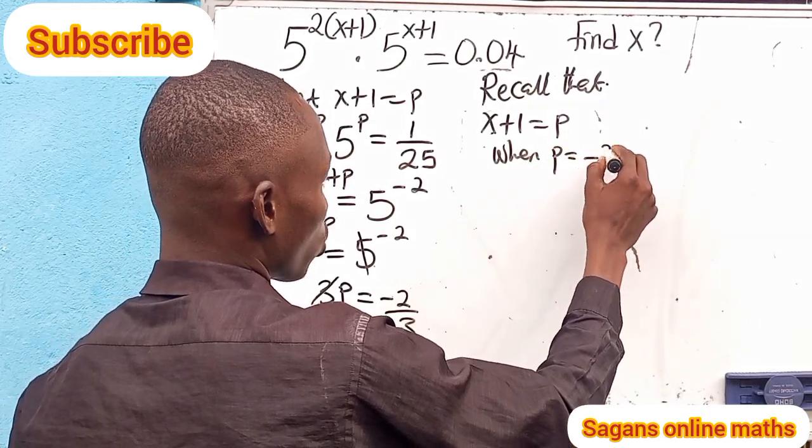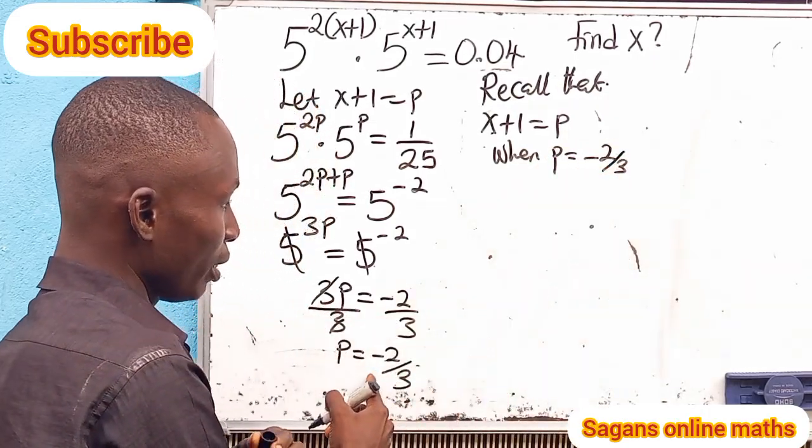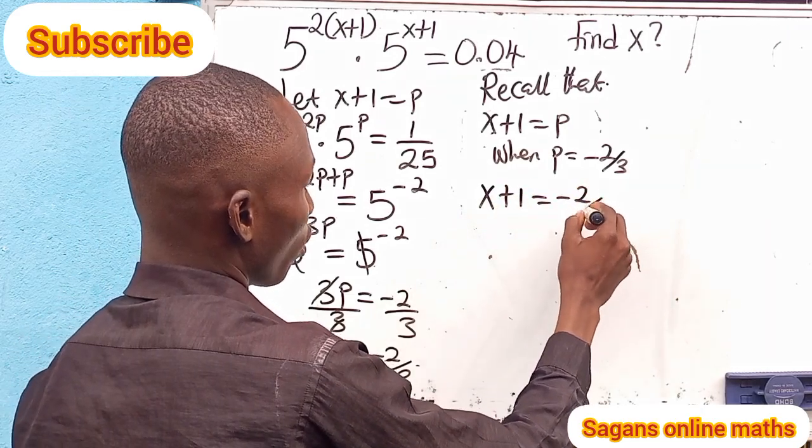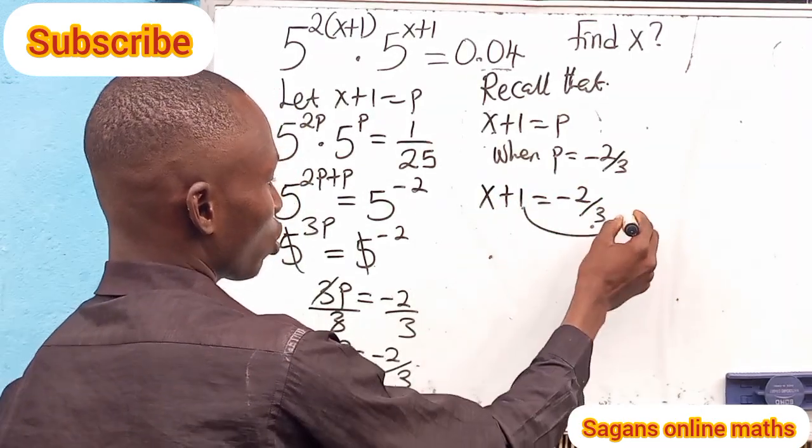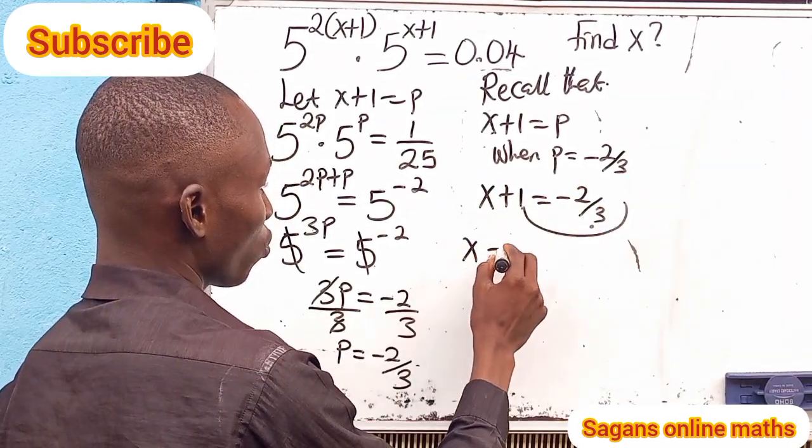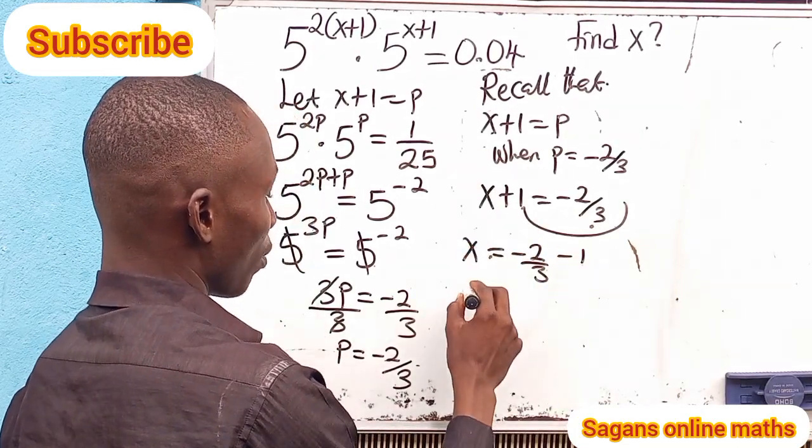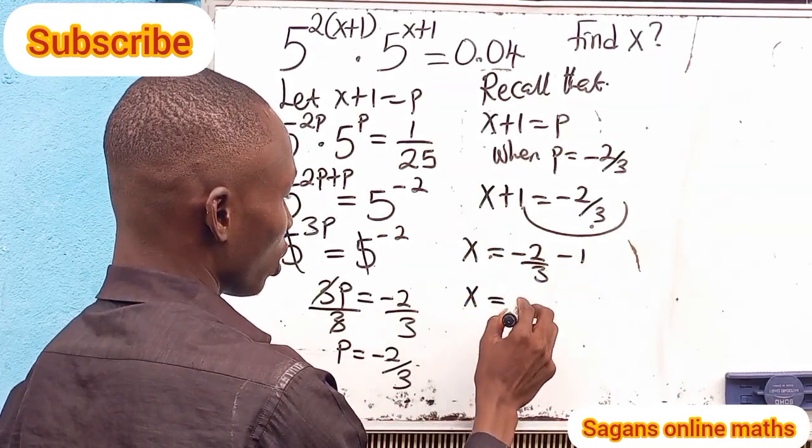We have x+1 equals -2/3. Now let's transfer this 1 to the right-hand side. This gives us x equals -2/3 minus 1.